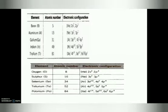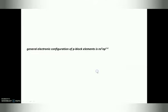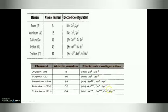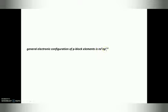Now let us move to the P block elements. How can we say an element is in P block? If the last electron enters the P subshell, those are P block elements. A P orbital can hold a maximum of 6 electrons. Before the P subshell, there is a completely filled S orbital, so the general outer electronic configuration is NS2 and NP1 to 6.